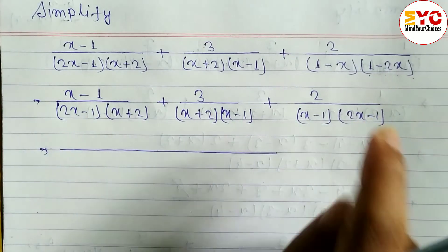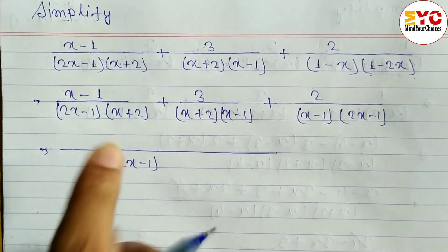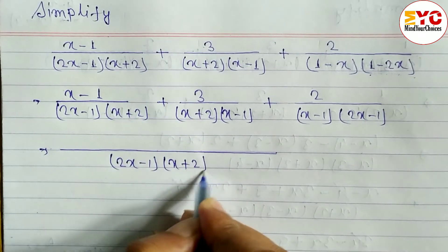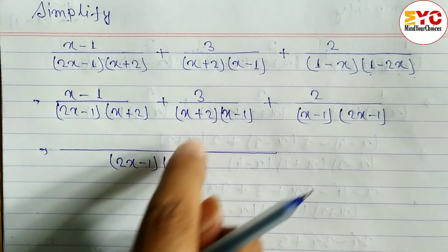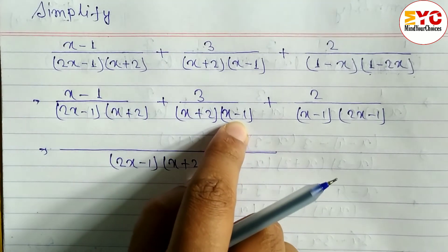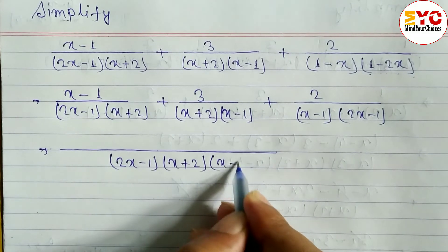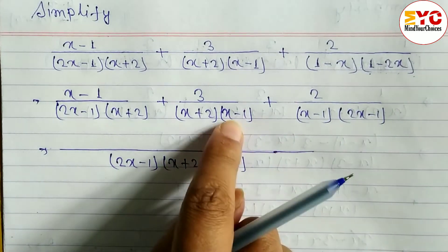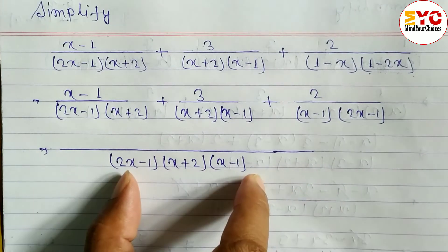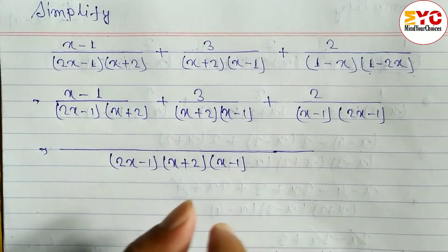Now we take LCM. The common factor 2x minus 1 is written once, then x plus 2 written once, then x minus 1 written once. There are no remaining factors, so LCM is (2x minus 1)(x plus 2)(x minus 1).